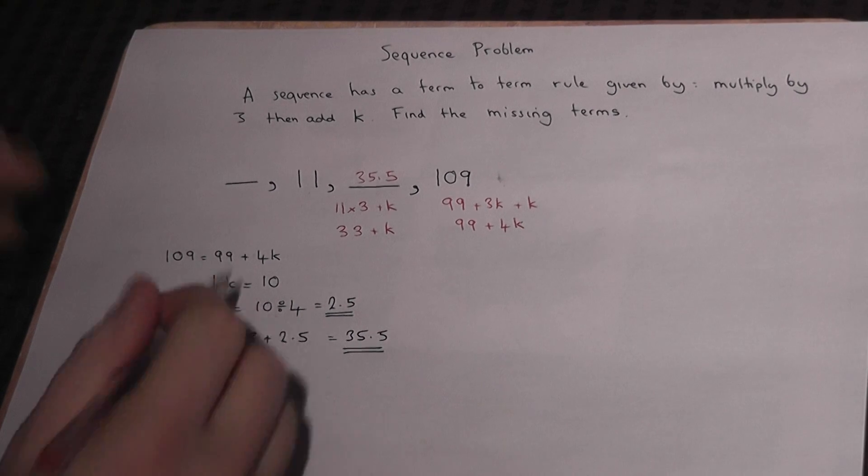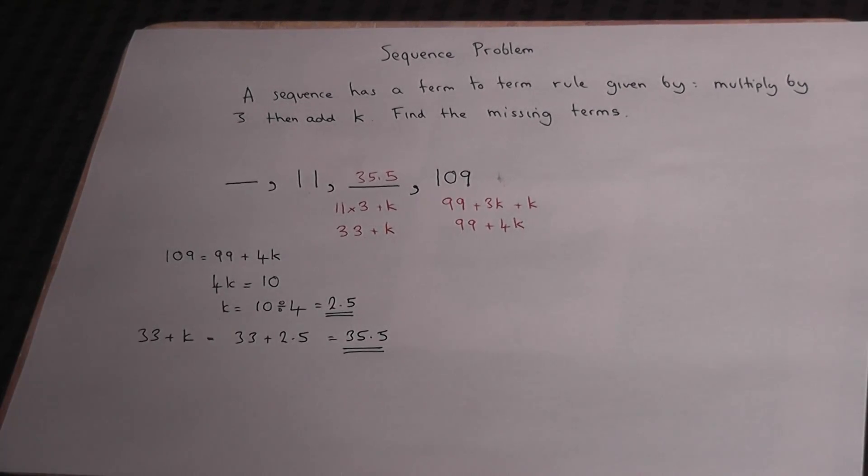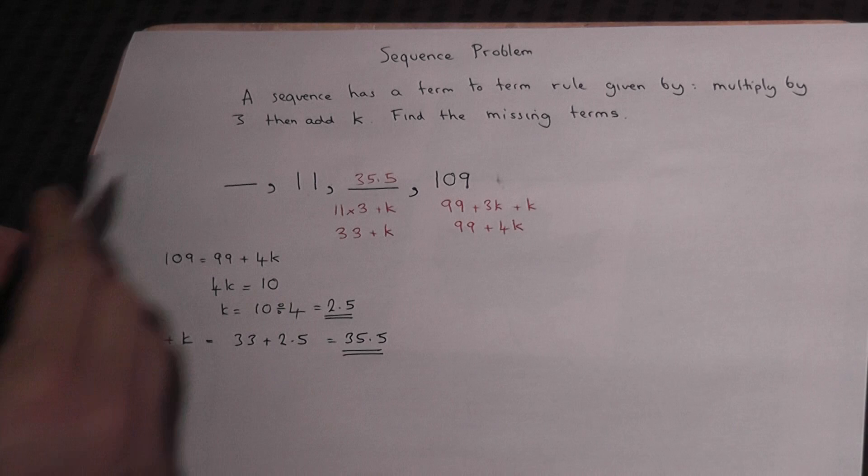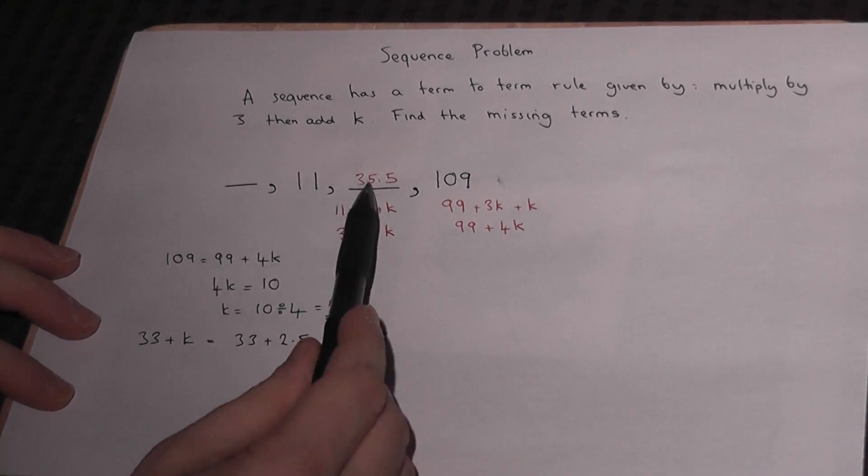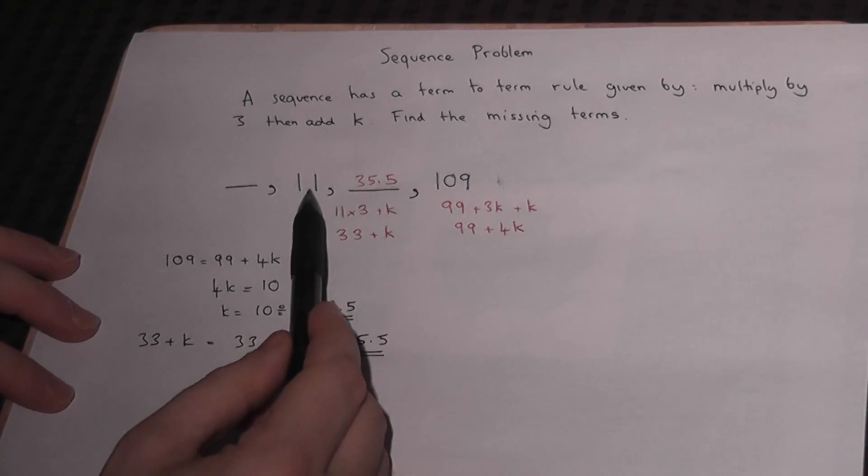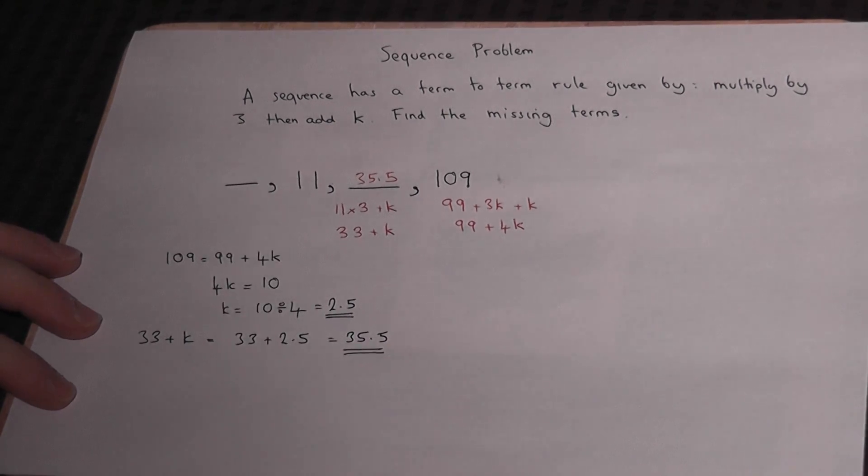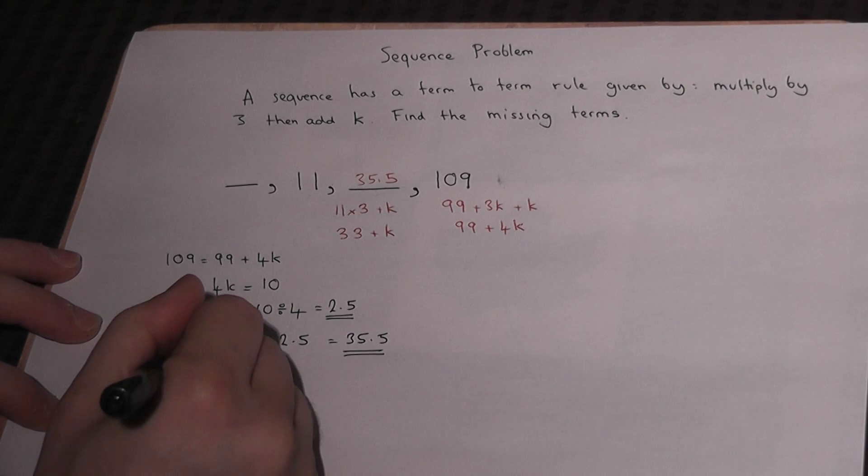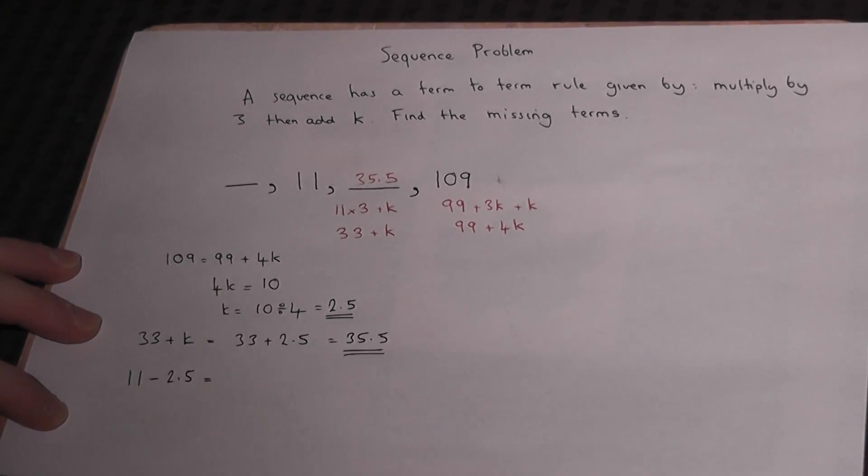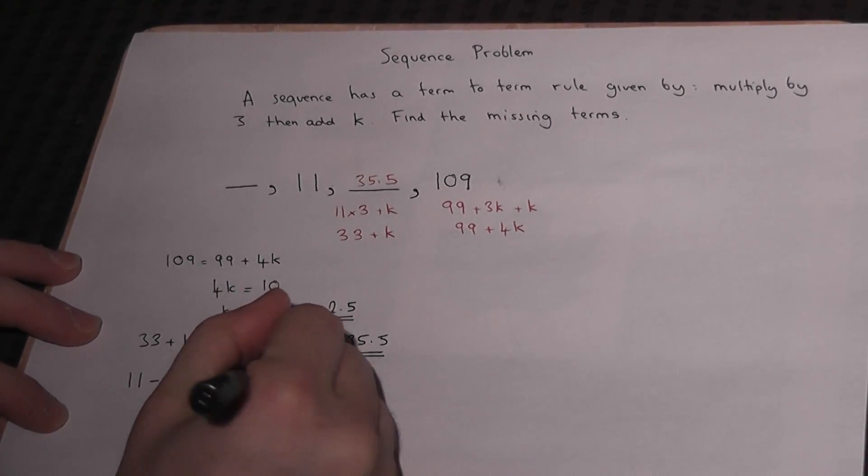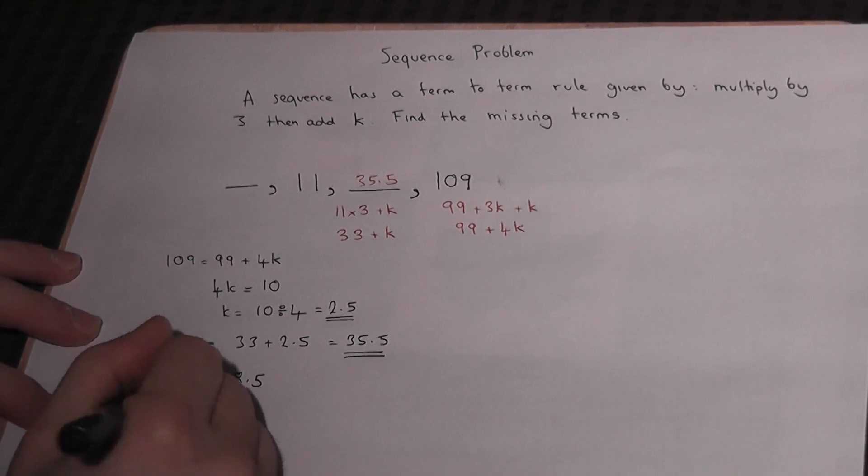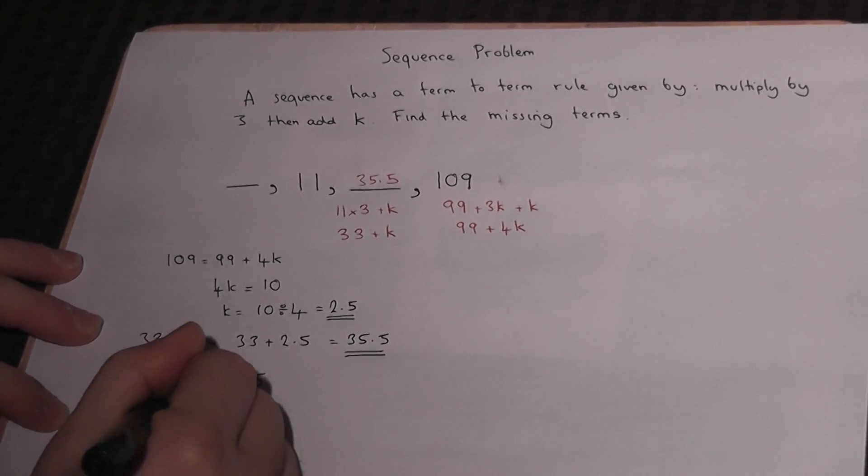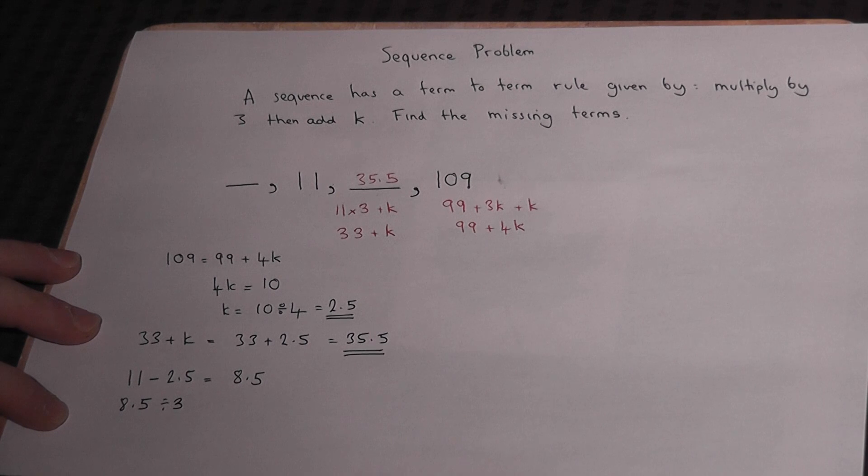Now then, to get to the first term, we have to work in reverse, go backwards. So rather than times by 3 and add k, we have to take away k and then divide by 3. So 11 take away k, which is 2.5, equals 8.5. Then 8.5 divided by 3 gives us the first term.